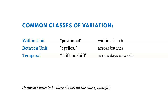The three classes of variation are: within unit or positional — that's variation within a batch; between unit, also called cyclical variation, which is across batches; and temporal variation, which is shift to shift, or across days or weeks.